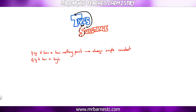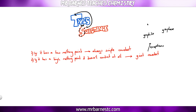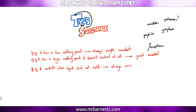Rule two: does it have a high melting point and not conduct at all — neither as a solid nor a liquid? If so, it's giant covalent. Remember the exceptions: graphite, graphene, nanotubes, and fullerenes — the question will usually give you a clue if it's one of these. Rule three: does it conduct when liquid but not when solid? If so, it's always ionic, because the ions are now free to move. Rule four: if it conducts both as a solid and as a liquid, it's metallic — keeping in mind those same conducting giant covalent exceptions.